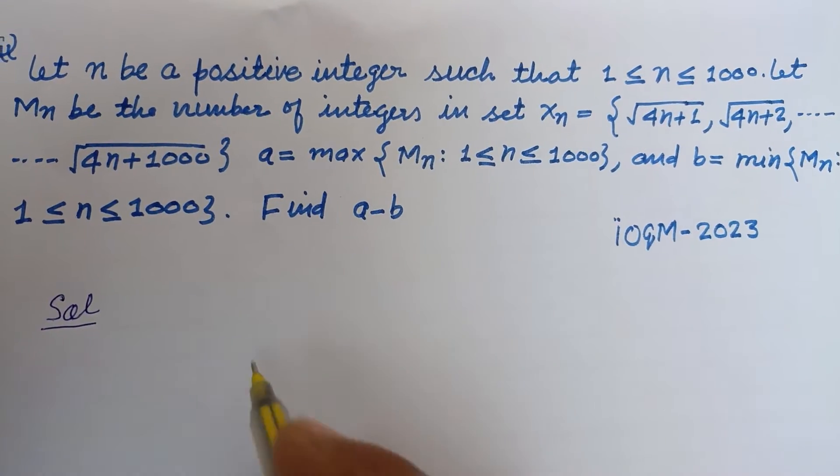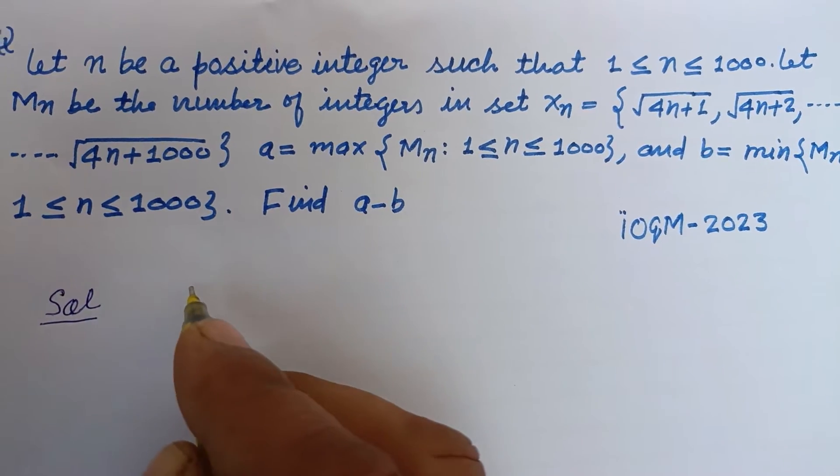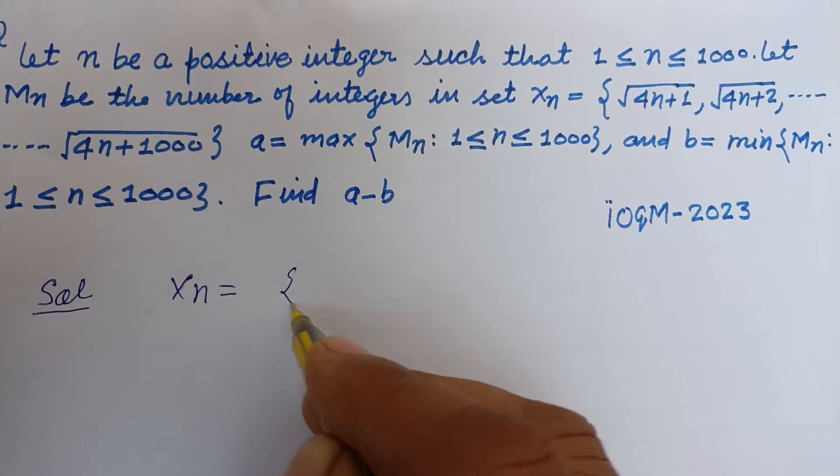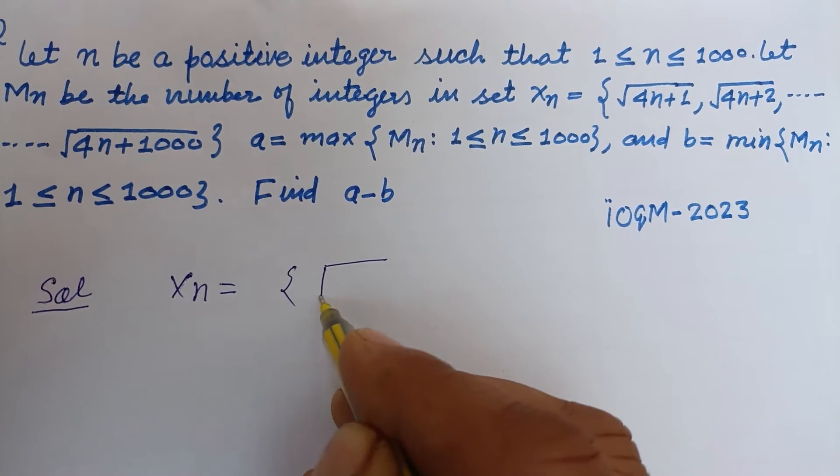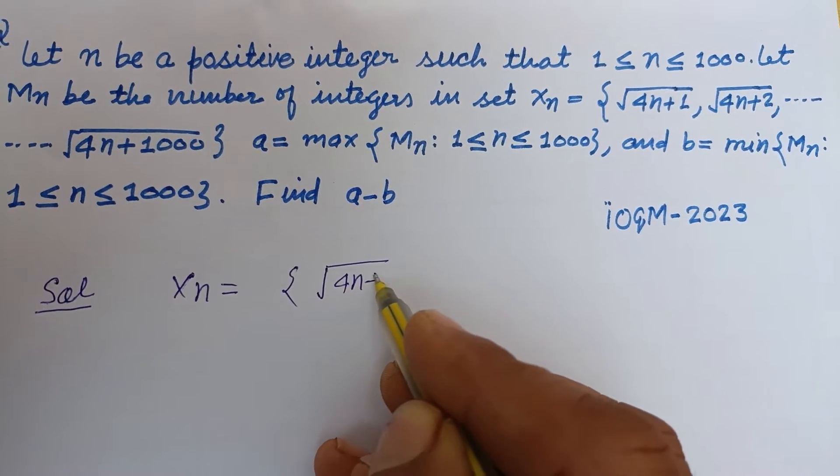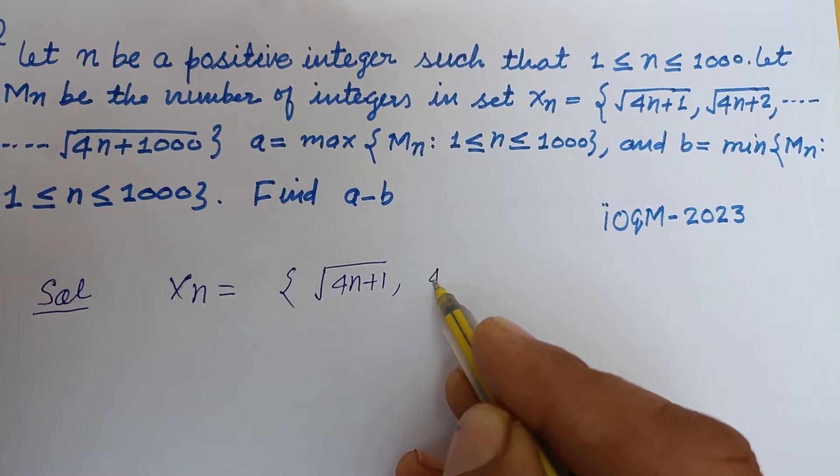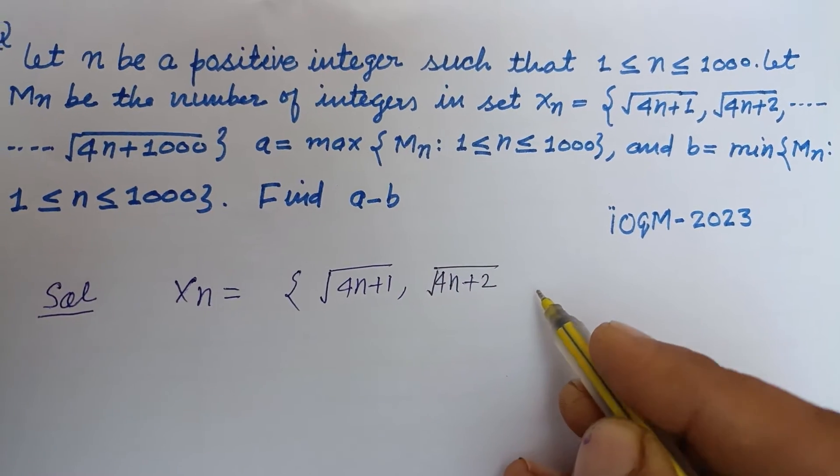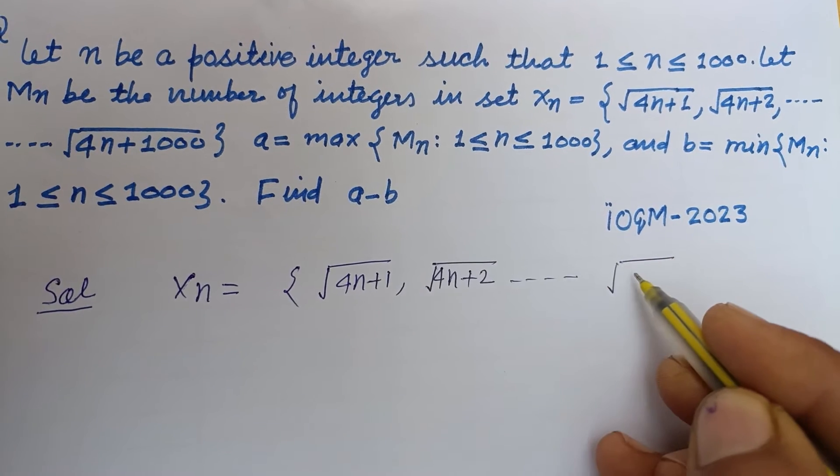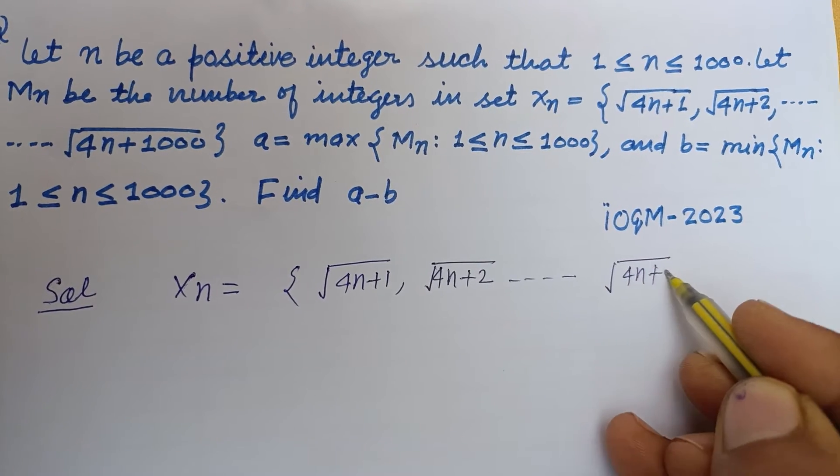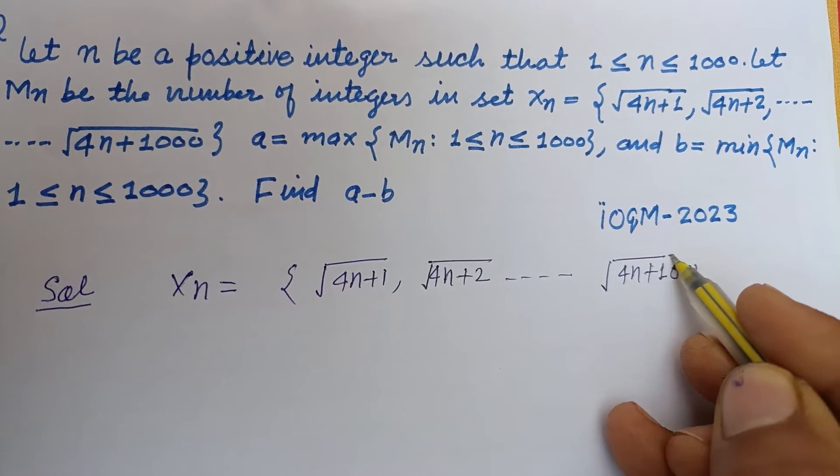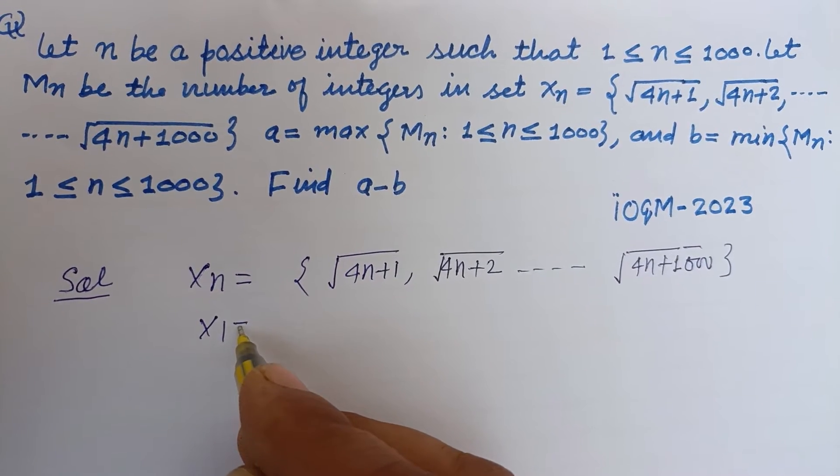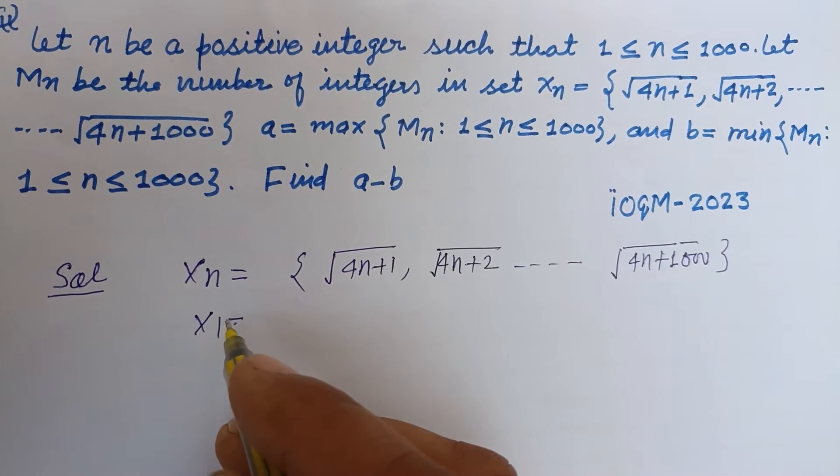First we write Xn which is given to us: √(4n+1), √(4n+2), dot dot dot up to √(4n+1000). So first we put n equal to 1.